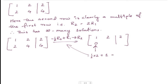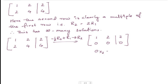Continuing the row operation: minus one-half times row 2 added to row 1 gives minus 2 plus 2 which is 0, and similarly for the last entry we get 0. So the resulting row 2 becomes all zeros, giving us 0 times x2 equals 0.